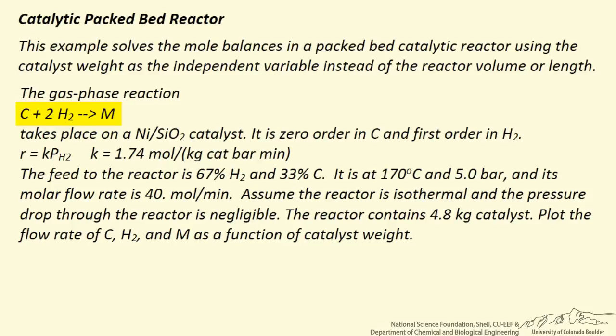So we are given a gas phase hydrogenation reaction, C + 2 H2 --> M, that takes place over a nickel catalyst. Now it is zero order in C and it is first order in the concentration of hydrogen. The rate constant is given and note the units are such to be consistent with the fact that we have the rate now per kilogram of catalyst.